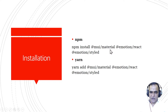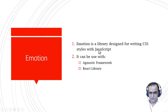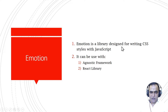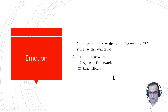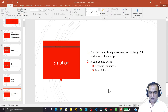Emotion is a library designed for writing CSS styles with JavaScript. Material UI uses Emotion. This Emotion library is used to write CSS using JavaScript. It can be used with two types of libraries: an agnostic framework and a React library. We will see in this series how to use Emotion with the React library.